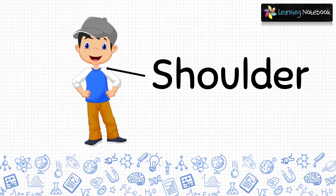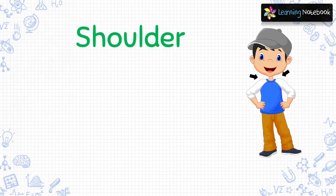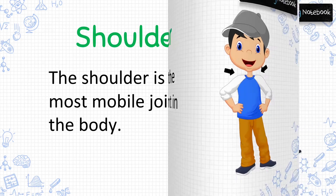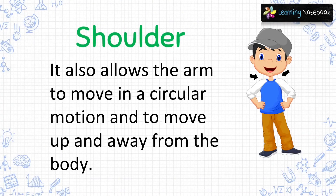Now, let's understand about the next external body part which is shoulder. Do you know which is the most mobile joint in our body? Yes, it is the shoulder. The shoulder is the most mobile joint in the body. The shoulder also allows the arm to move in a circular motion and to move up and away from the body.